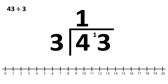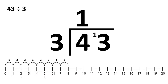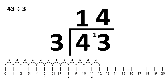And how many times will 3 go into 13? One group, two groups, three groups, four groups — with 1 left over. This time, we have nowhere to carry over that 1, so we just add R1, or remainder 1. Which means that 43 divided by 3 is 14 with remainder 1.